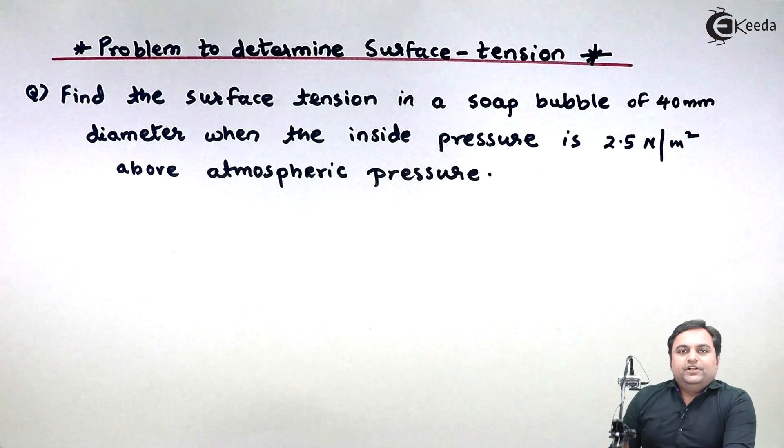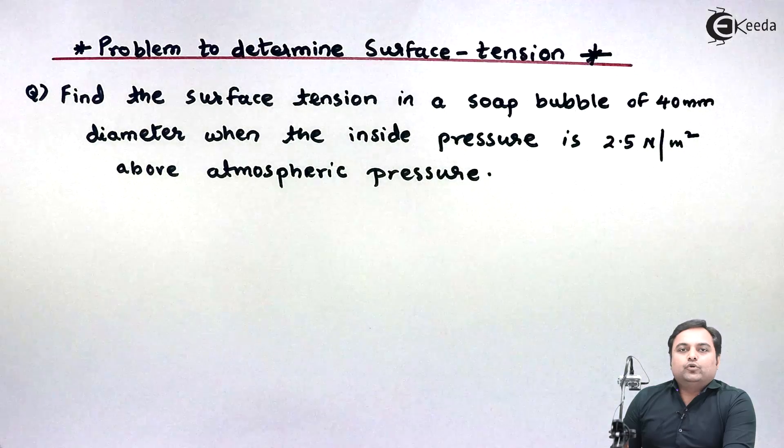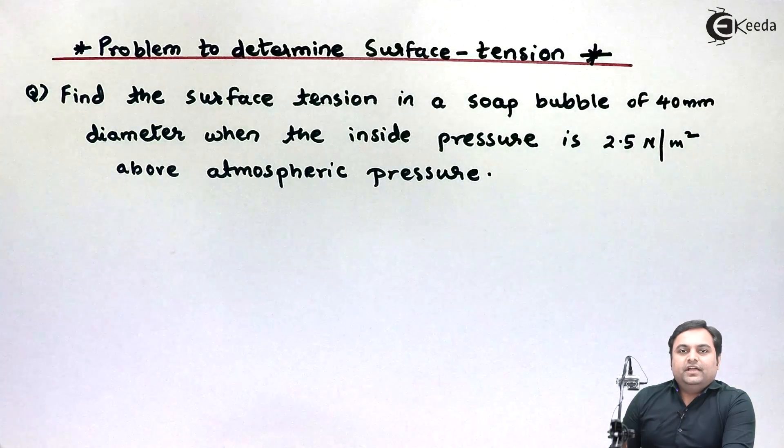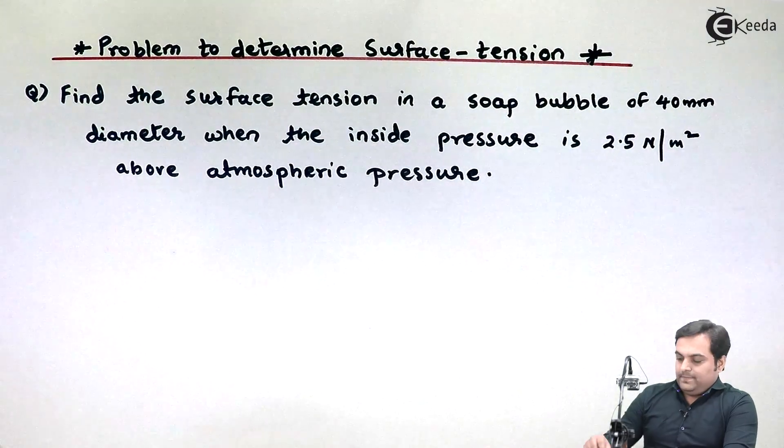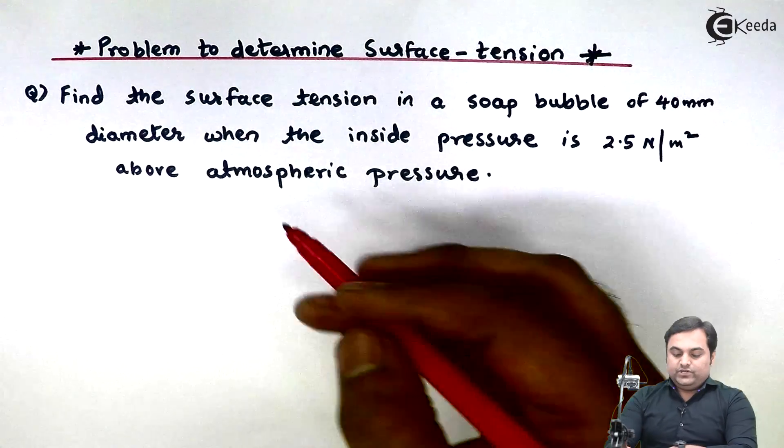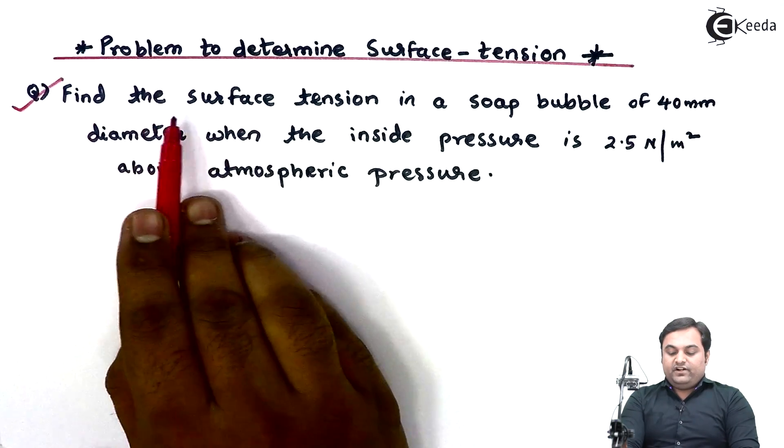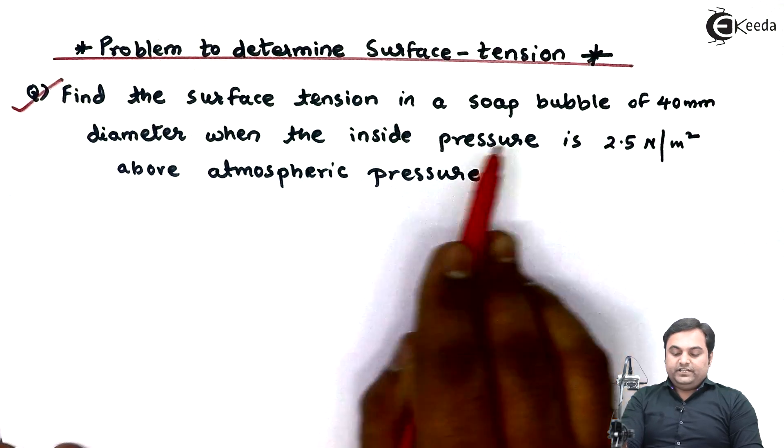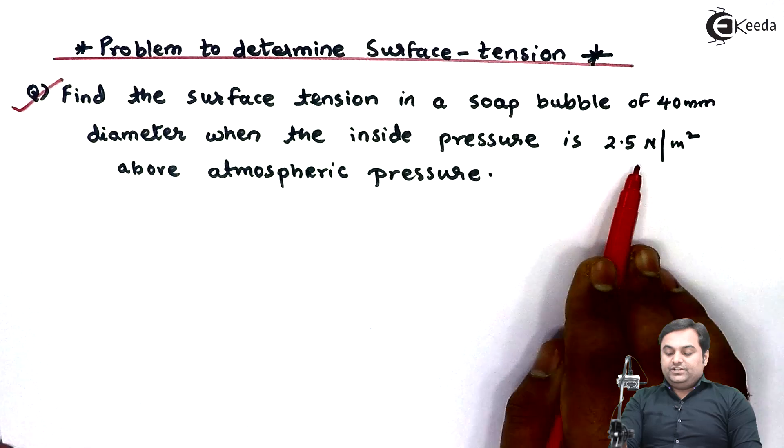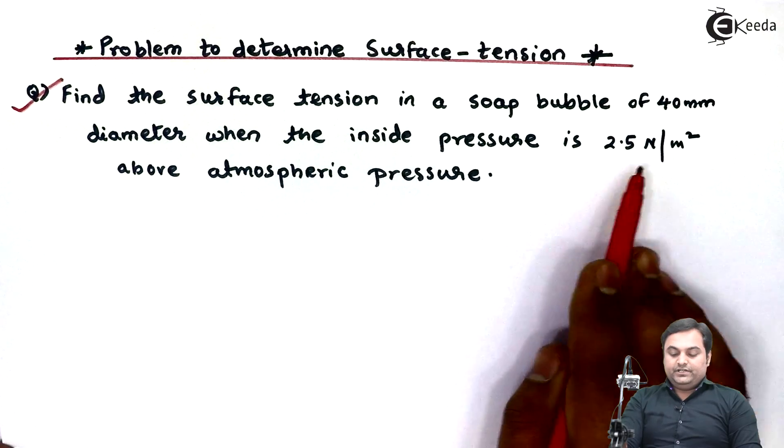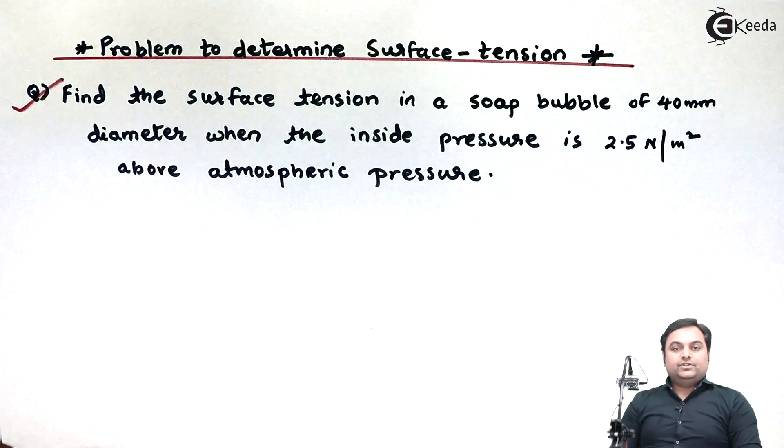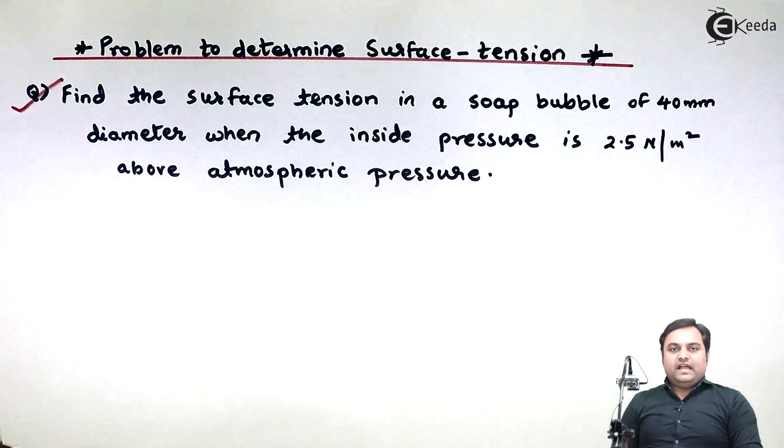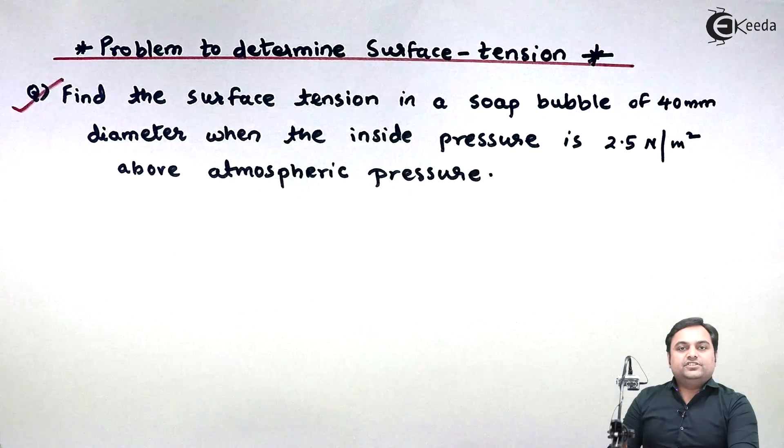Hello friends, in this video we will see how to find surface tension in a soap bubble. Here we have a question: Find the surface tension in a soap bubble of 40 mm diameter when the inside pressure is 2.5 Newton per meter square above atmospheric pressure.